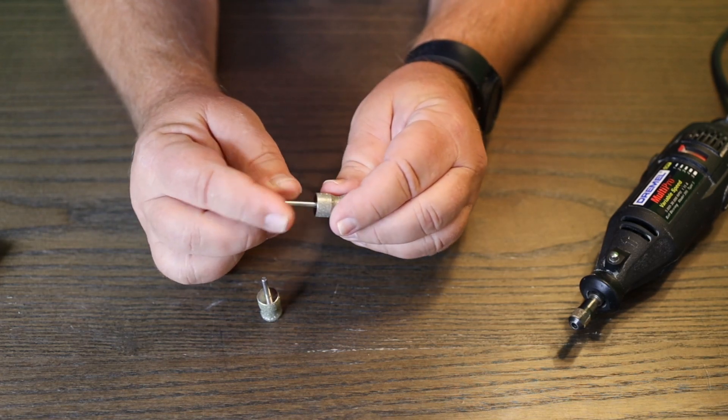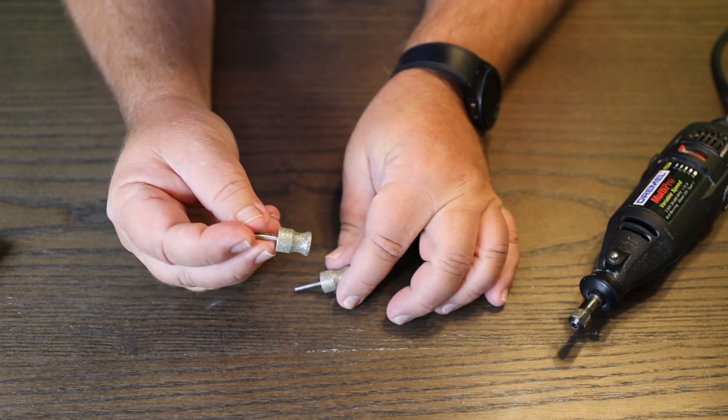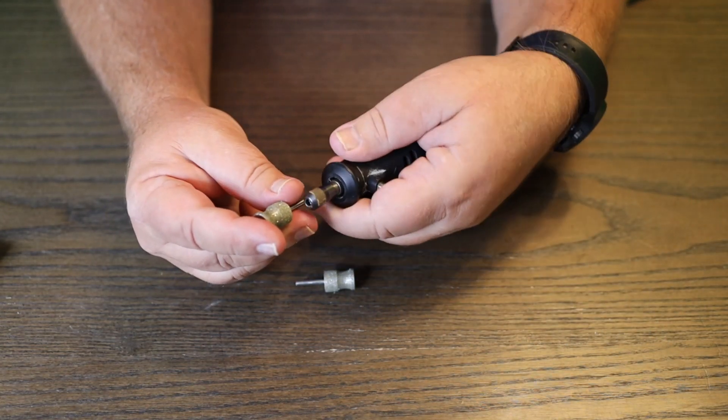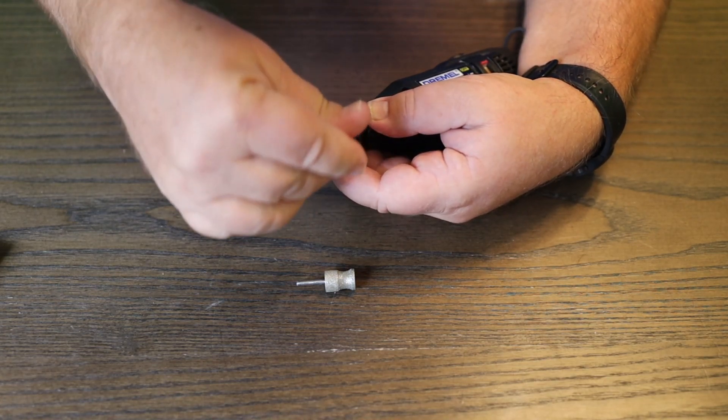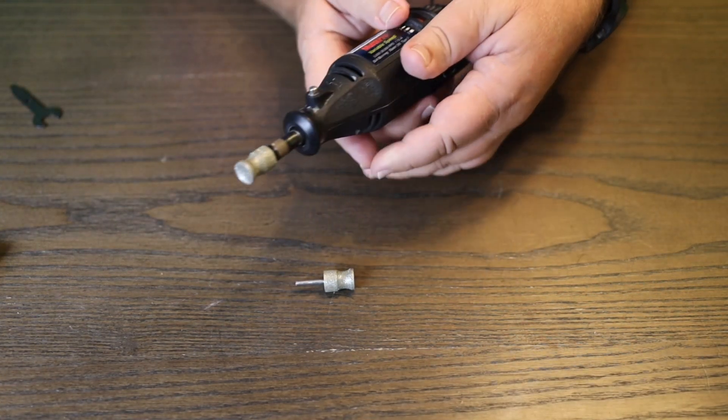You can go with this one, go with this one for a little smoother. You just attach these to your Dremel, and you are good to go.